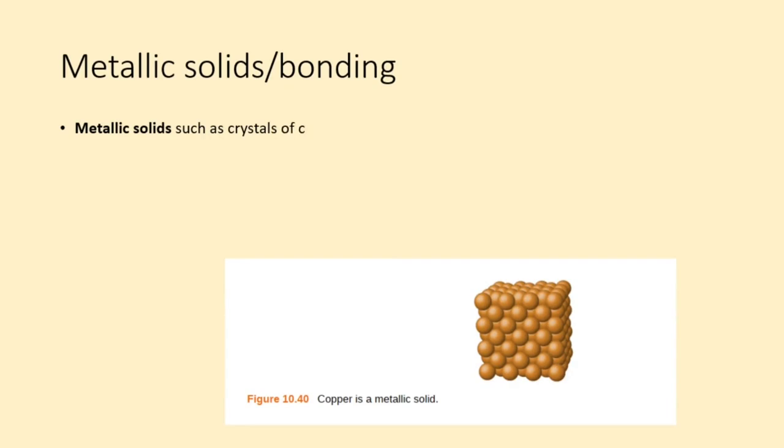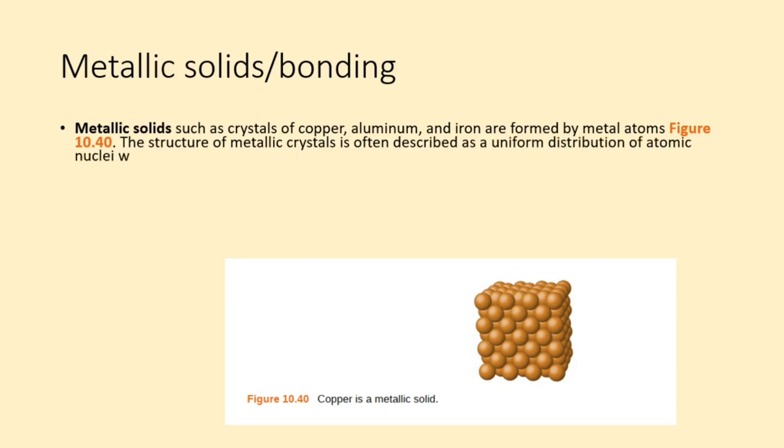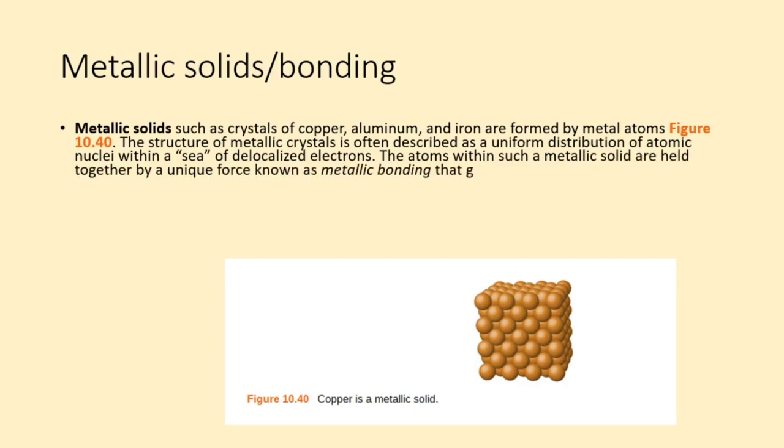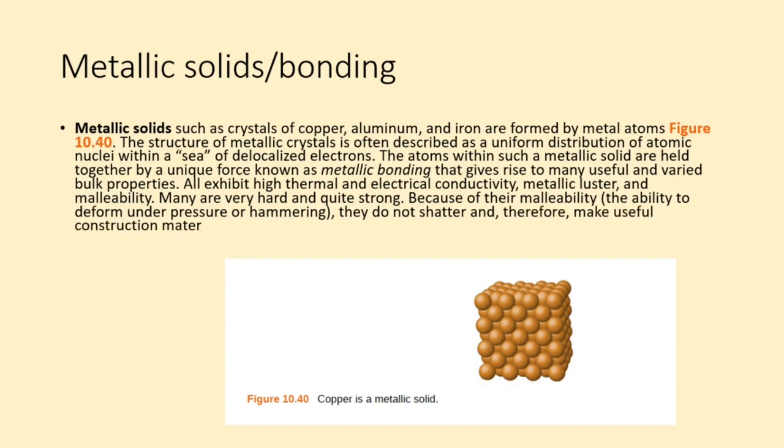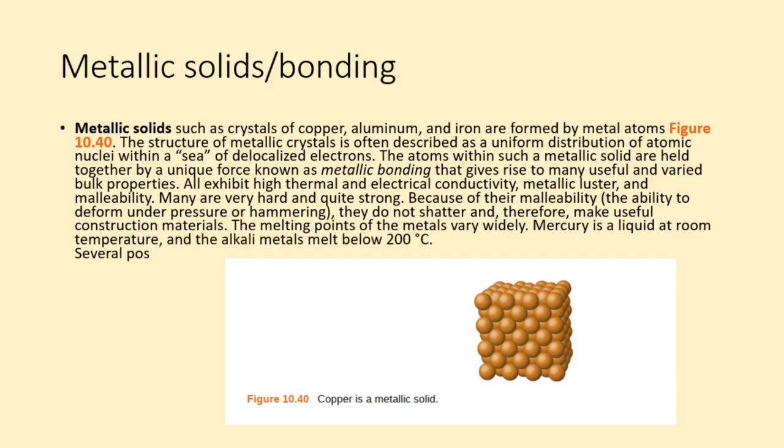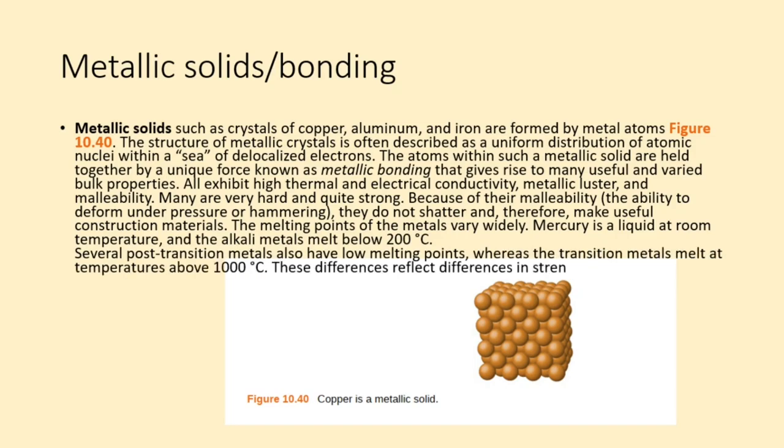Metallic solids such as crystals of copper, aluminum, and iron are formed by metal atoms, figure 10.40. The structure of metallic crystals is often described as a uniform distribution of atomic nuclei within a sea of delocalized electrons. The atoms within such a metallic solid are held together by a unique force known as metallic bonding, that gives rise to many useful and varied bulk properties. All exhibit high thermal and electrical conductivity, metallic luster, and malleability. Many are very hard and quite strong. Because of their malleability, the ability to deform under pressure or hammering, they do not shatter and therefore make useful construction materials. The melting points of the metals vary widely. Mercury is a liquid at room temperature, and the alkali metals melt below 200°C. Several post-transition metals also have low melting points, whereas the transition metals melt at temperatures above 1000°C. These differences reflect differences in strengths of metallic bonding among the metals.